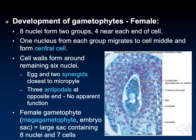Those eight nuclei form two groups and move to each end of the cell, so there are four nuclei on each end. One nucleus from each end will then migrate to the middle. What we have then are three nuclei at the top called antipodals, two central nuclei in the middle, and three nuclei at the bottom called synergids. At this point the female gametophyte is ready for fertilization. One of the synergids will become the egg, and this egg will fertilize with a sperm from a male gamete.